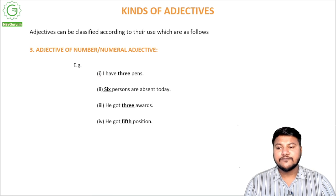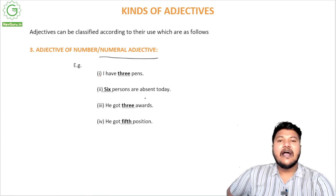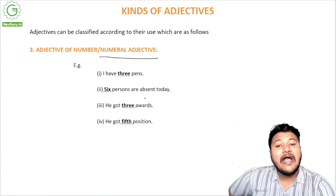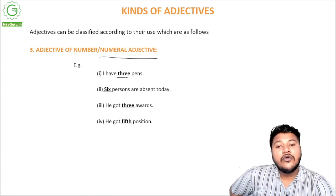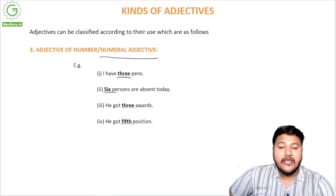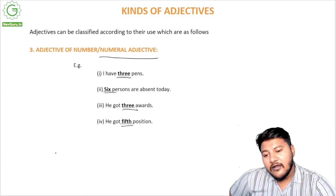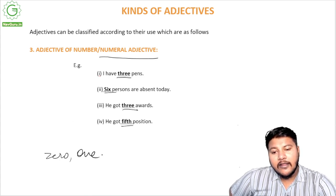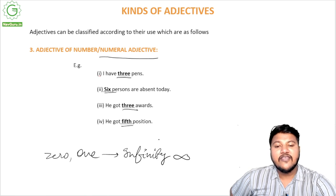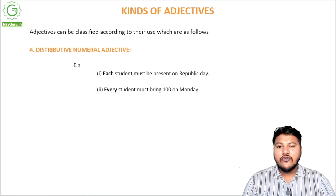Moving on, we have adjectives of number, also known as numeral adjectives. For example, 'I have three pens' — 'three' is a number used to denote quantity, so it is a numeral adjective. 'Six persons are absent today' — 'six' is the adjective of number. 'They got three awards,' 'they got fifth position.' Anything from zero up to infinity, any number you use, will come under numeral adjectives.